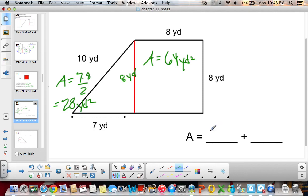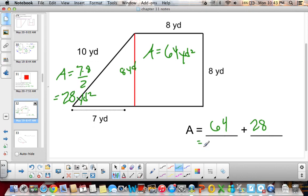So now I'm going to add them together. So I have 64 plus 28, so 64 plus 28 equals 92 yards squared.